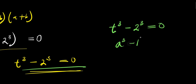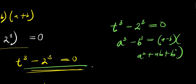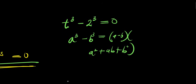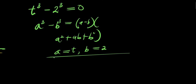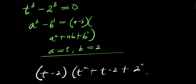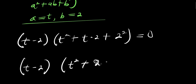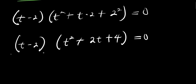We have a cubed minus b cubed equals a minus b times a squared plus a times b plus b squared. Don't forget that our a is t and b is 2. So what we are going to have will be t minus 2 times t squared plus t times 2 plus 2 squared, and this equals zero. So from here: t minus 2 times t squared plus 2t plus 4 equals zero.